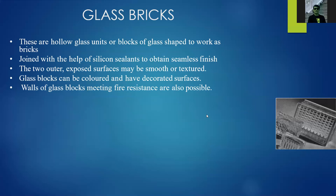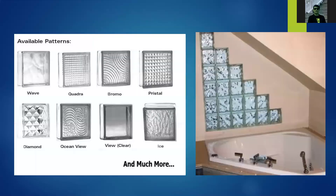Glass bricks are hollow glass units shaped to work like a brick, joined with the help of silicone sealant to achieve a seamless finish. The two outer exposed surfaces may be smooth or textured. Glass blocks can be colored and have collaborative surfaces. Fire-resistant glass brick is also possible. Common available patterns include the wave pattern, crystal pattern, and clear view pattern, commonly seen in buildings.